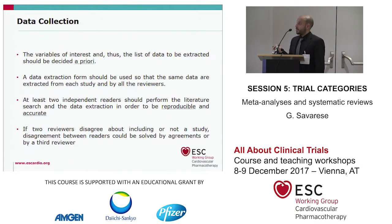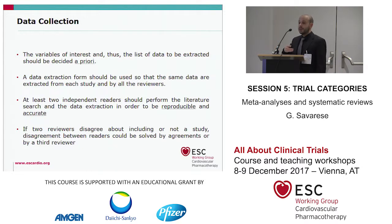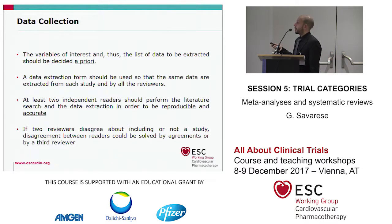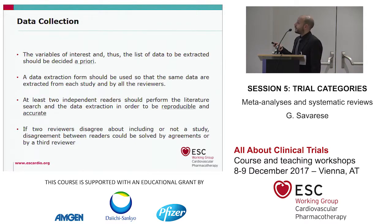Another important step when we perform a meta-analysis or a systematic review is data collection. The variables of interest and the list of data to be extracted should be decided a priori. Several investigators will contribute to the collection of data, and they all have to use the same definition for the variables. A data extraction form should be used so that the same data are extracted from each study and by all reviewers. At least two independent readers should perform the literature search and data extraction. If two reviewers disagree about including a study, disagreement can be solved by consensus or by a third reviewer.